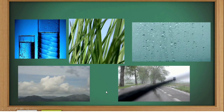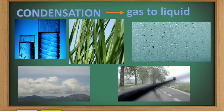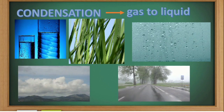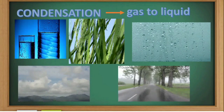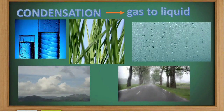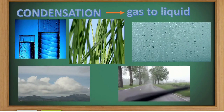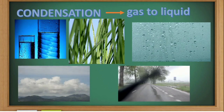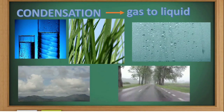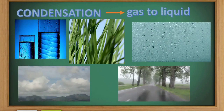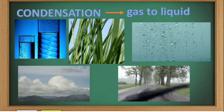The opposite of vaporization is condensation — the transition from gas to liquid. Think of cold water on a hot day with water droplets on the outside, or dew on the grass in the morning, or a steamed-up mirror after a hot bath, even clouds in the sky or a foggy windscreen on a car. These are all examples of condensation: water vapor in the air has cooled down to form liquid droplets of water.